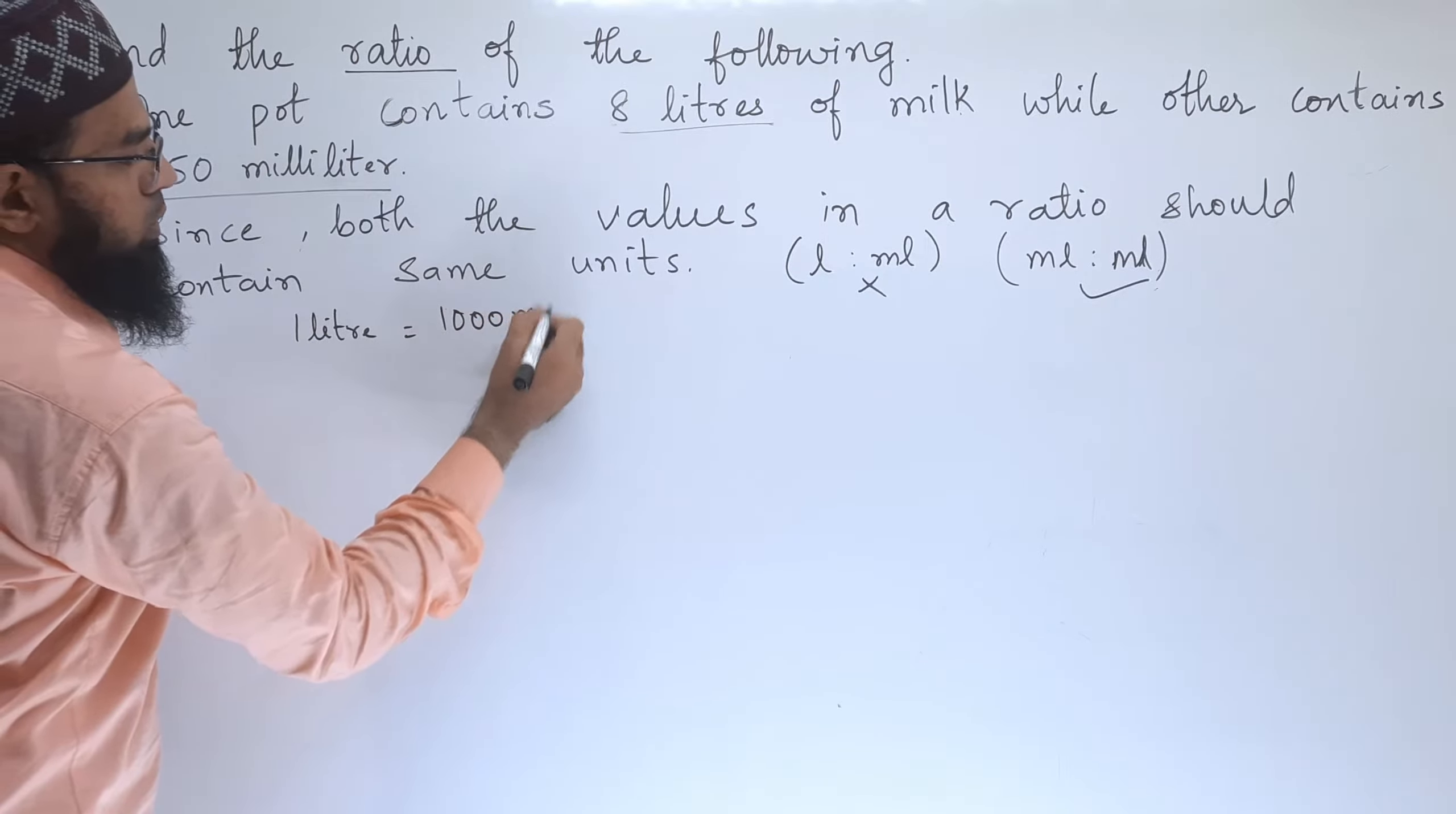So 0, 0 cancel. Next, we can cancel with 5. 5 ones are 5, 5 fives are 25, 5 ones are 5, 5 sixes are 30. So 160 is to 15. 5 threes are 15, 1 left, 5 twos are 10. So the ratio is 32 is to 3.